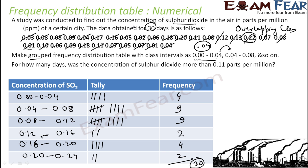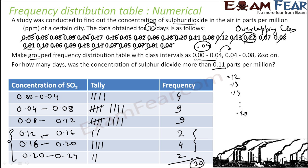Now the question is: for how many days was the concentration more than 0.11 parts per billion? More than 0.11 falls in these three classes — 0.12, 0.13, 0.14 up to 0.24. So you add these three classes: 4 plus 2 is 6, plus 2 is 8. So for 8 days, the concentration of sulfur dioxide was more than 0.11 parts per billion.